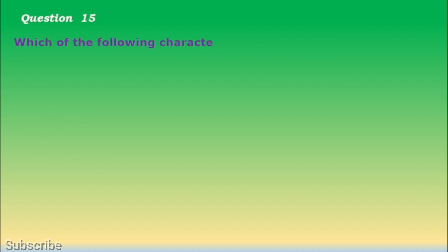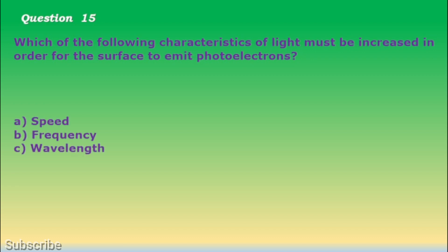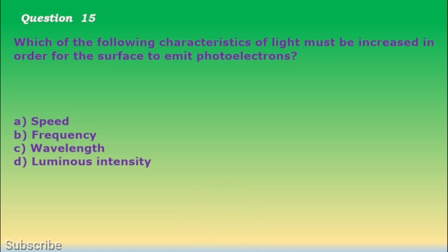Question number 15. Which of the following characteristics of light must be increased in order for the surface to emit photoelectrons? a. Speed, b. Frequency, c. Wavelength, d. Luminous intensity. The correct answer is letter b. Frequency.